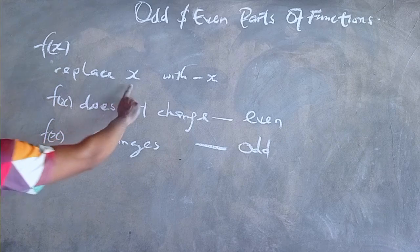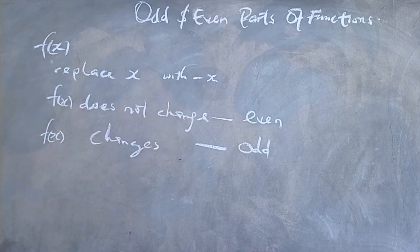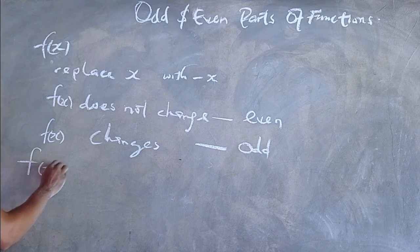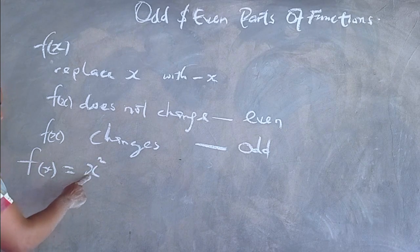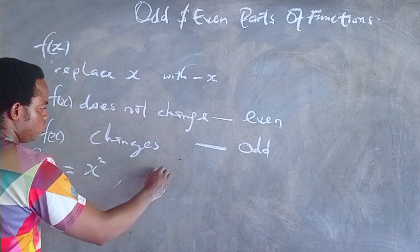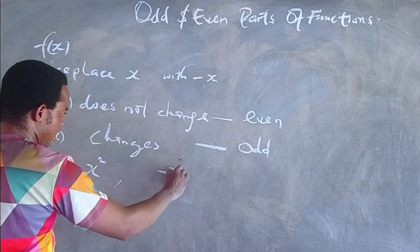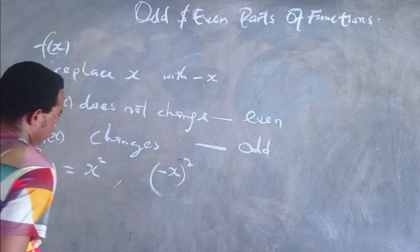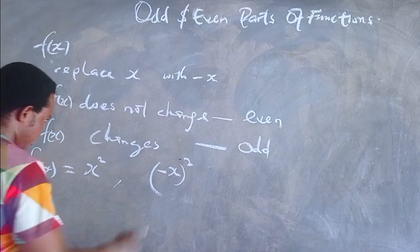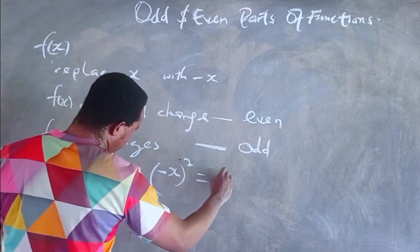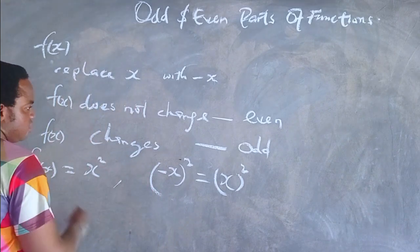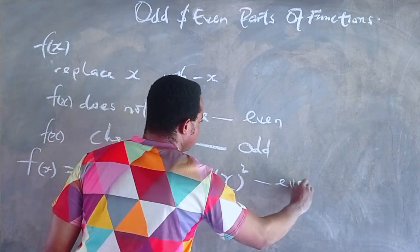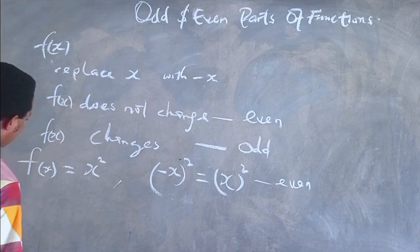A function can have both odd parts and even parts as well. Let us try this out. Let's say a function of x is x squared. Let us replace x with negative x and see what happens. When we replace x with negative x, that would be negative x squared, and that is the same as x squared. So that shows that function is an even function.